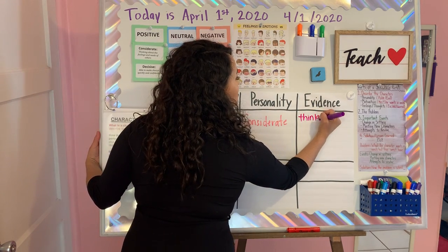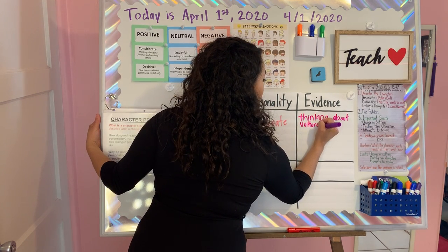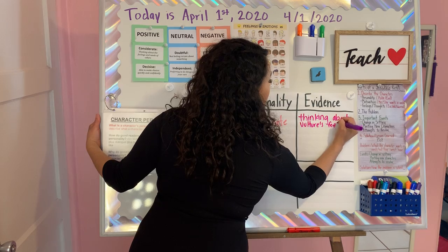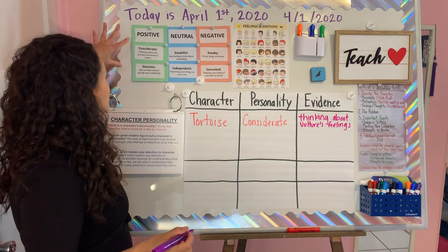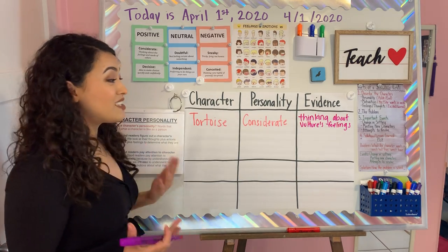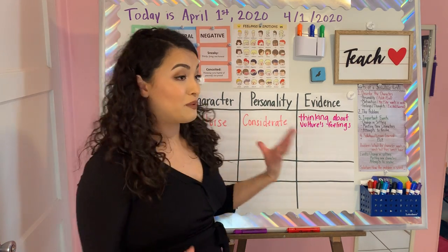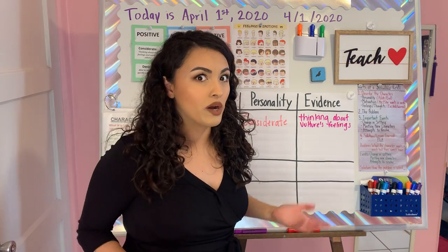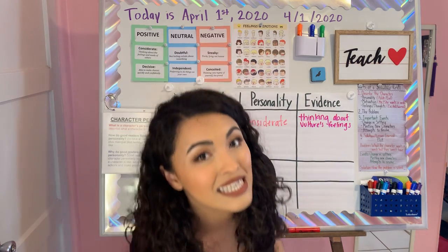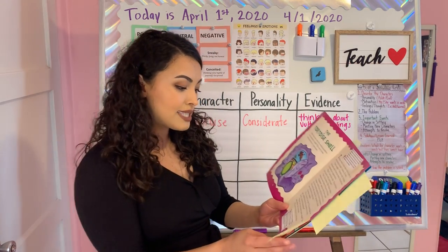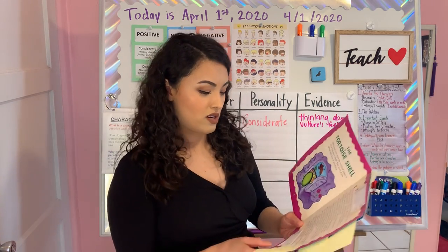I think this is a really great character trait because when you are considerate, you think of the feelings and needs of others. This really describes Tortoise because he was thinking about visiting his friend and what he might be feeling, even though he might not be able to, but he is still considering his feelings. So let's keep reading and see if we can find more character traits to describe this character or maybe even other characters.